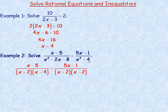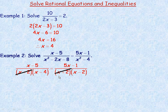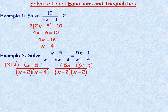x squared minus 4 is the difference of two perfect squares, so it factors into x plus 2 times x minus 2. Notice there's an x plus 2 factor in both denominators, so those x plus 2's will divide out. Multiplying both sides by x plus 2, the x plus 2 on the left divides out with that denominator, and the x plus 2 on the right divides out with that one. We're left with x minus 5 over x minus 4 equals 5x minus 1 over x minus 2.